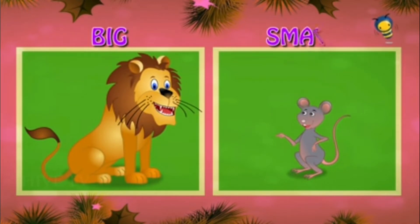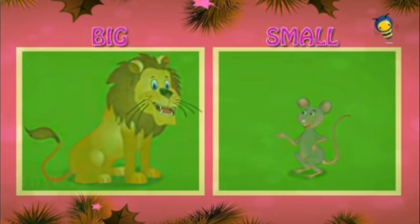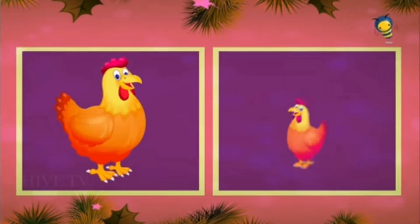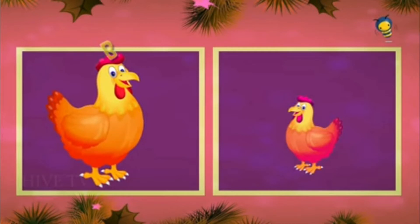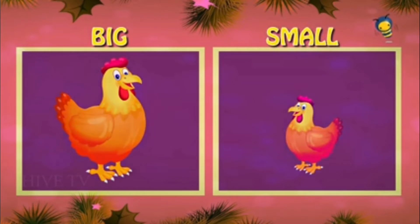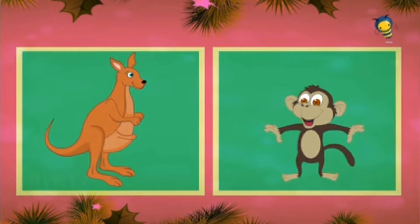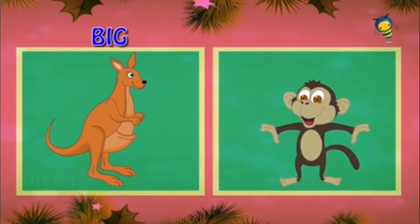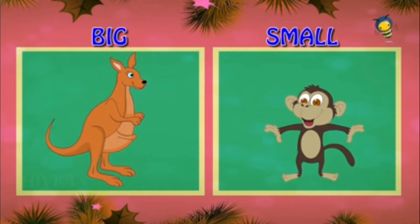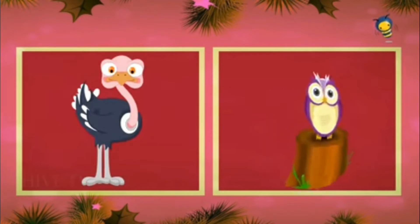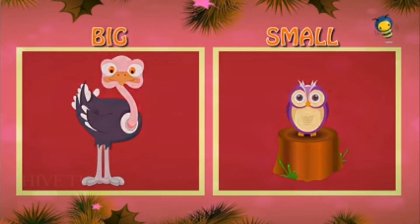Lion is big and mouse is small. Hen is big and chick is small. Kangaroo is big and monkey is small. Ostrich is big and monkey is small.